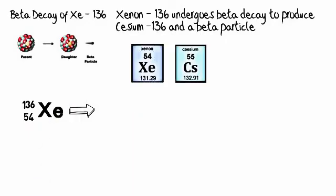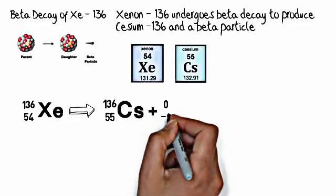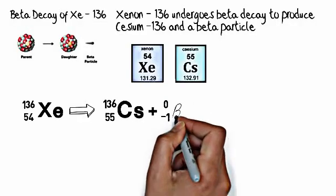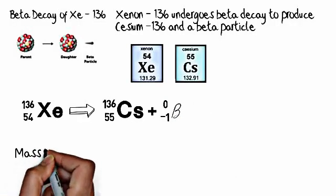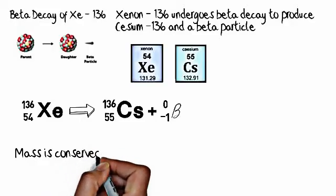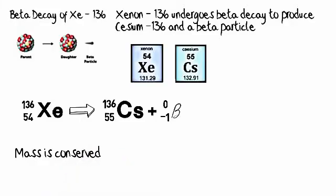A beta particle is negatively charged. So, it's 0, negative 1 because it's a negatively charged beta particle. And beta has this fancy little symbol. Is mass conserved? Yes, mass is conserved because the mass is the same on both sides of the arrow.